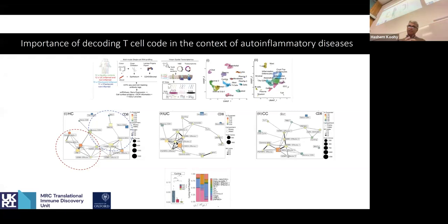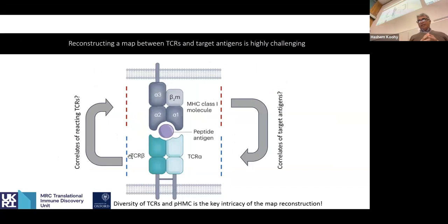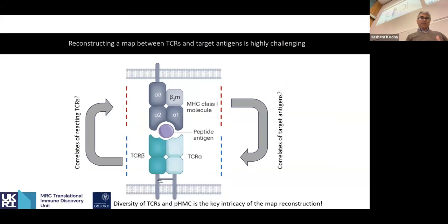Therefore, this is an example of why it is important to be able to link TCRs to their cognate antigens. On one hand we have peptide-MHC complexes sitting on the cell surface, and on the other hand we have TCRs. The question has turned out to be very difficult to resolve for a number of reasons. A key one is the high level of diversity at both the TCR level and the peptide-MHC level.